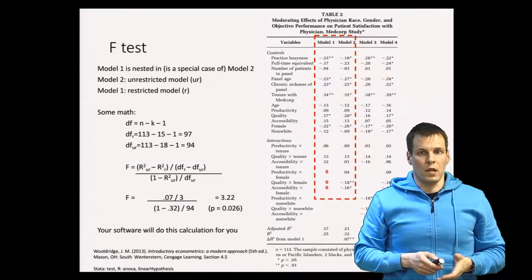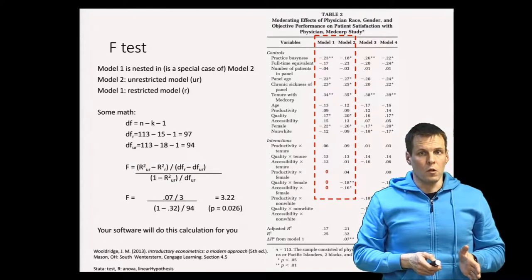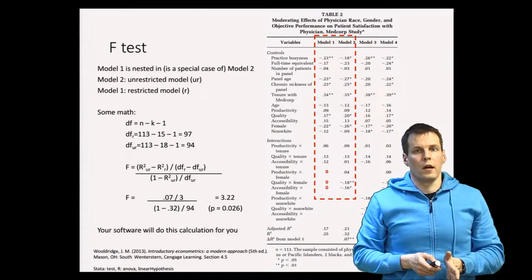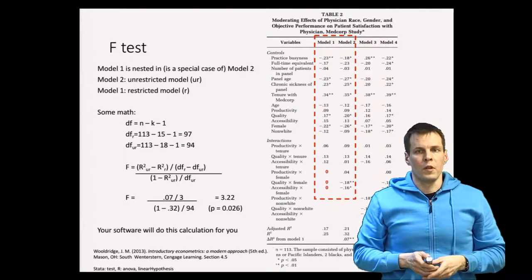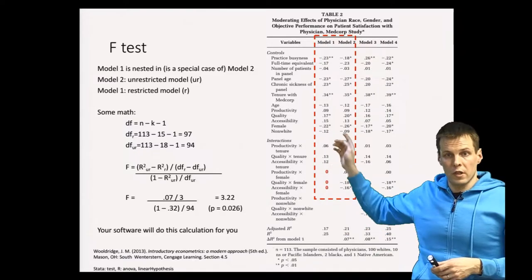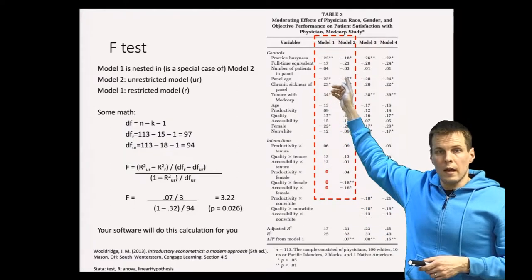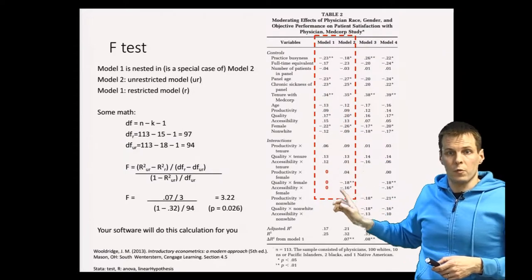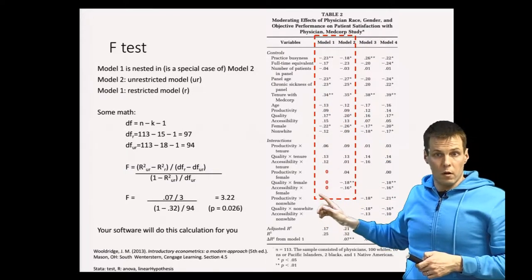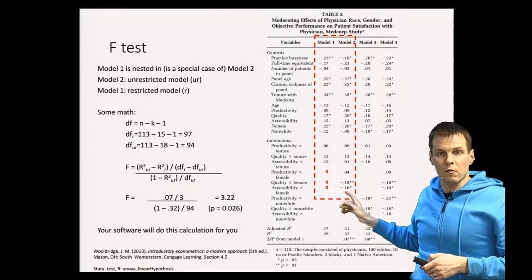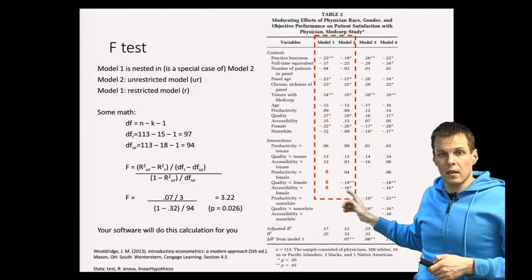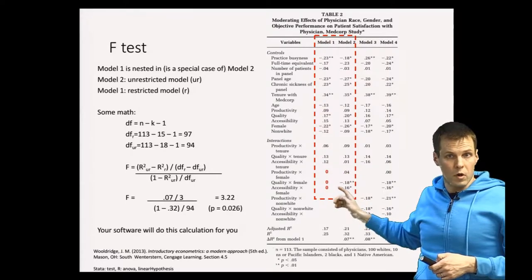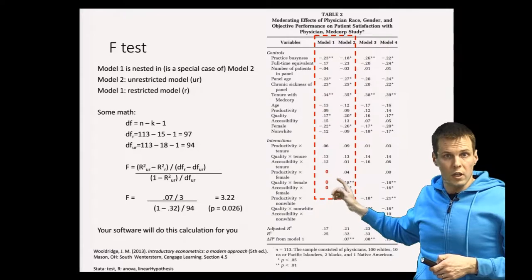In F-test in regression analysis we have two models. One is the constraint model and another one is the unconstrained model. Here model 2 is the more general unconstrained model and model 1 is a special case of model 2, because we get model 1 from model 2 by saying that these regression coefficients that are estimated here are actually zeros in model 1 because we don't include these variables.